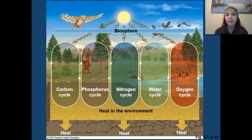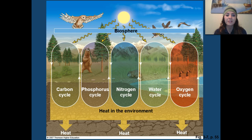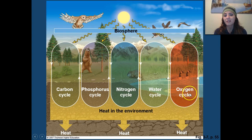First of all, we're going to talk about the biosphere, which is where all life on Earth exists. There are many cycles that occur in the biosphere. We have the carbon cycle, the phosphorus cycle, the nitrogen cycle, the water cycle (also called the hydrological cycle), as well as the oxygen cycle.